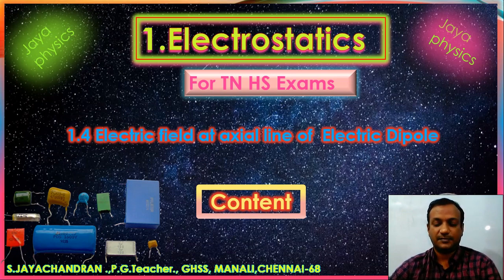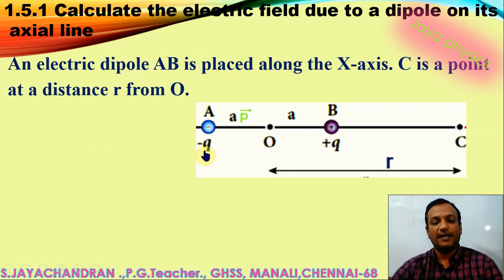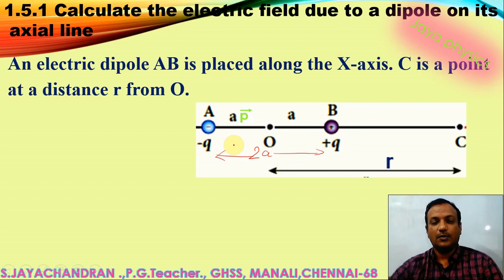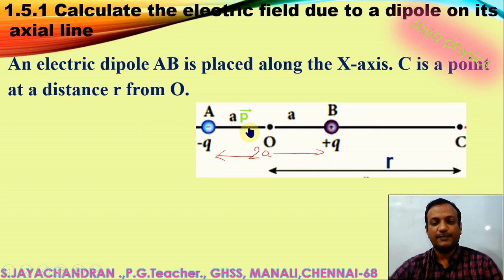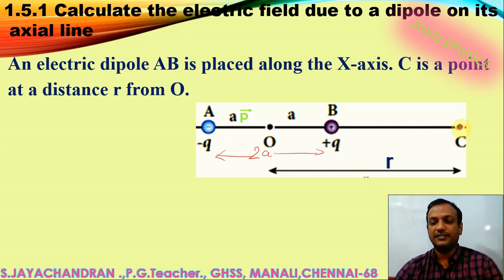Now, I have a charge minus q and another charge plus q placed at points A and B. The distance between these two charges is 2a. This arrangement is known as an electric dipole. The dipole is placed along the x-axis. The line joining these two charges is known as the axial line.